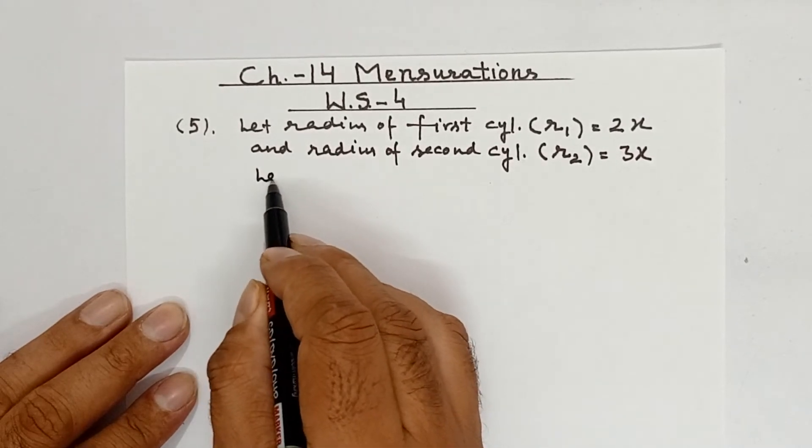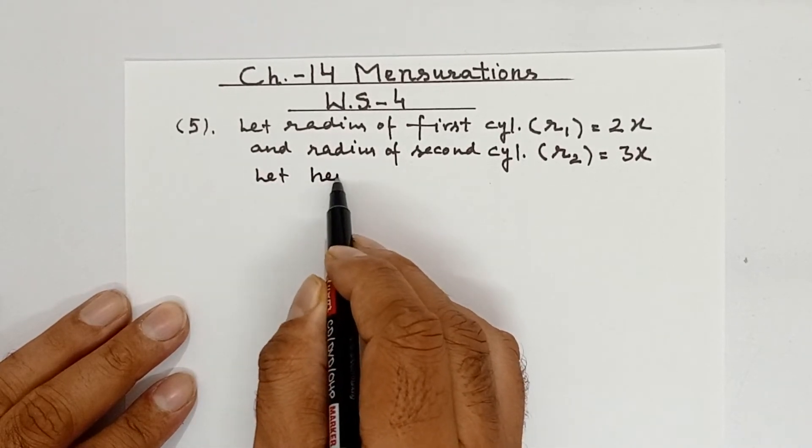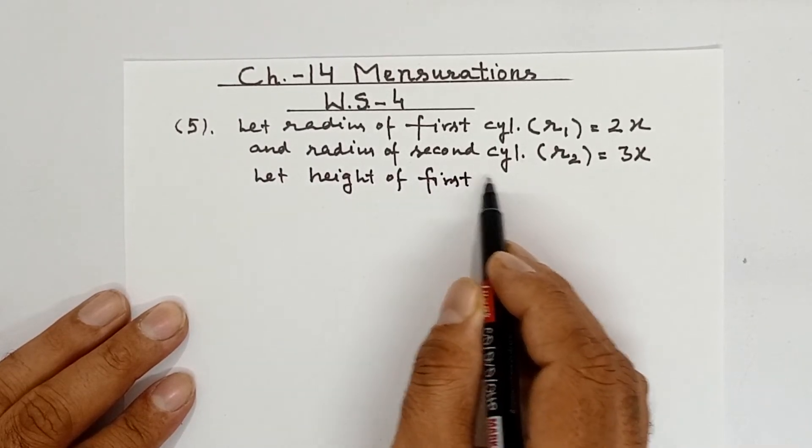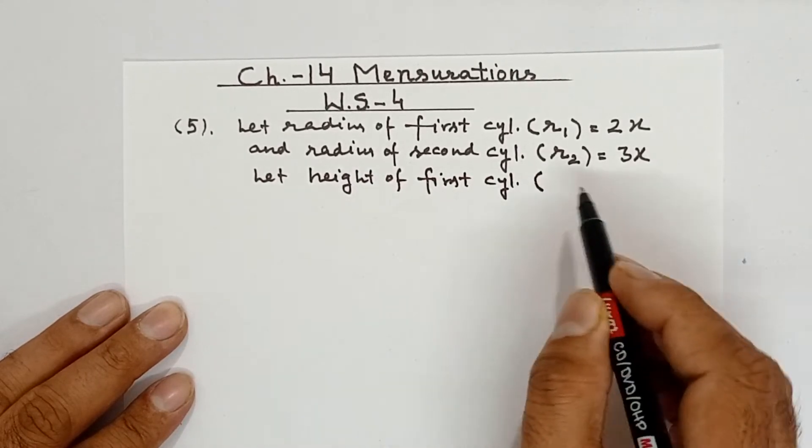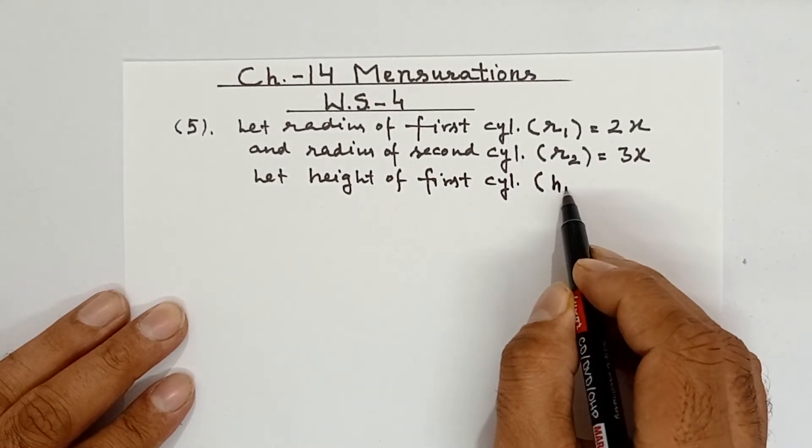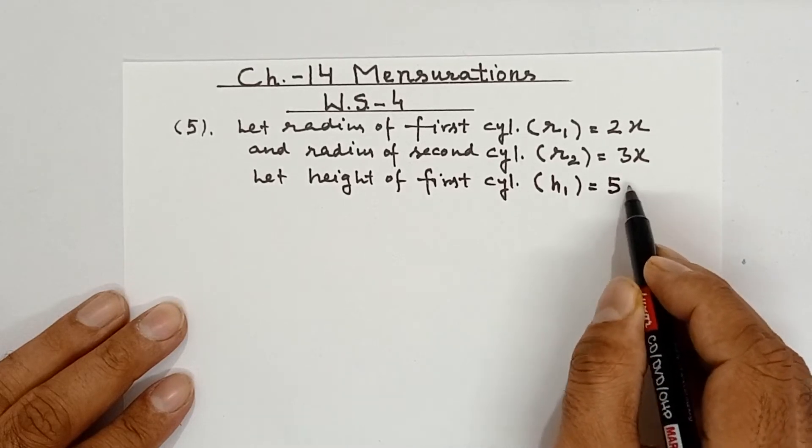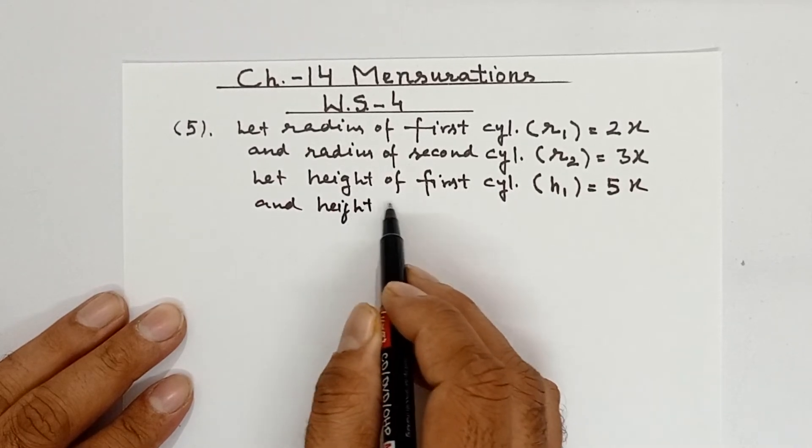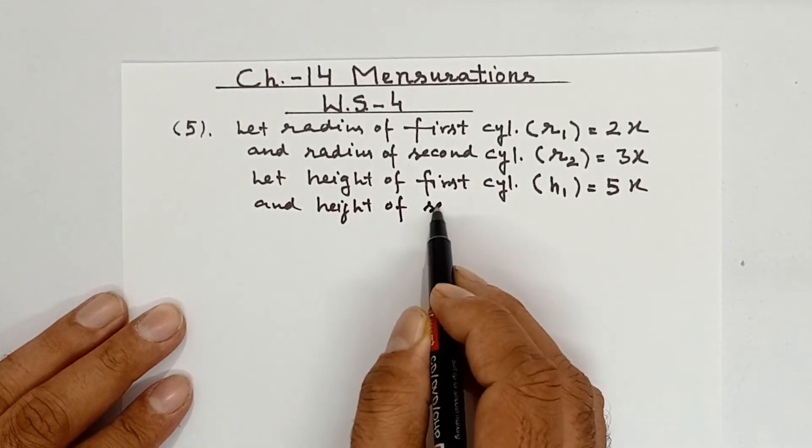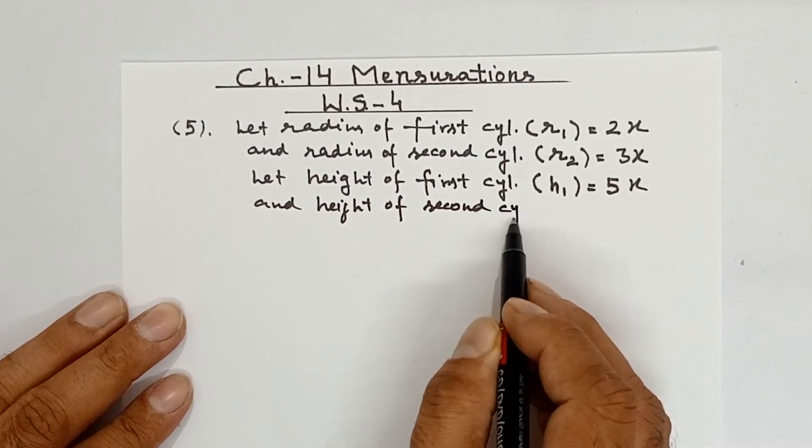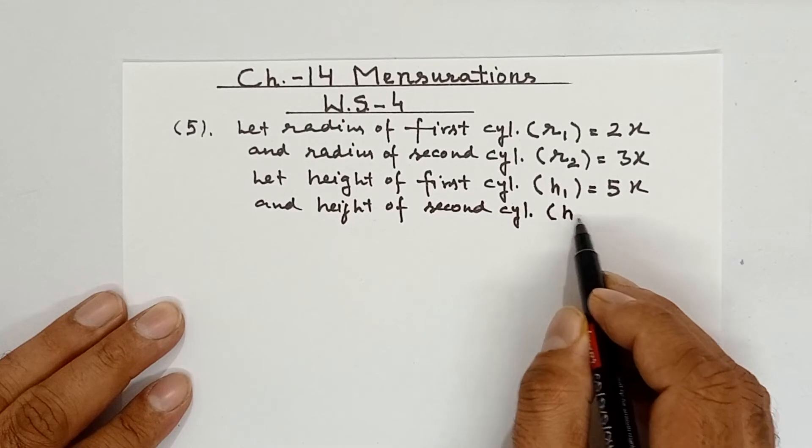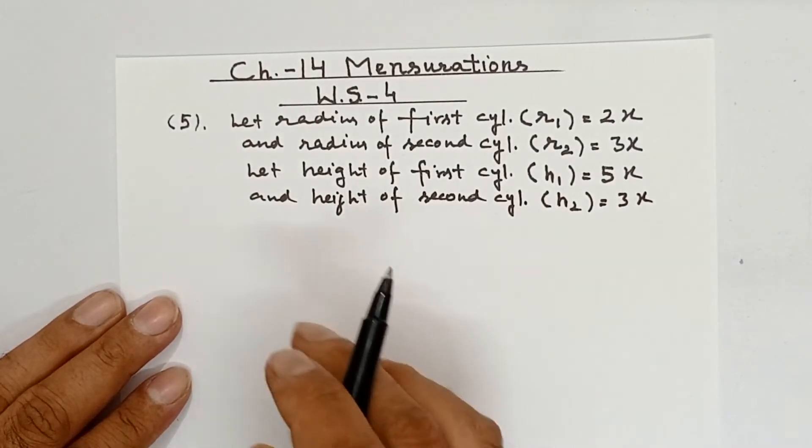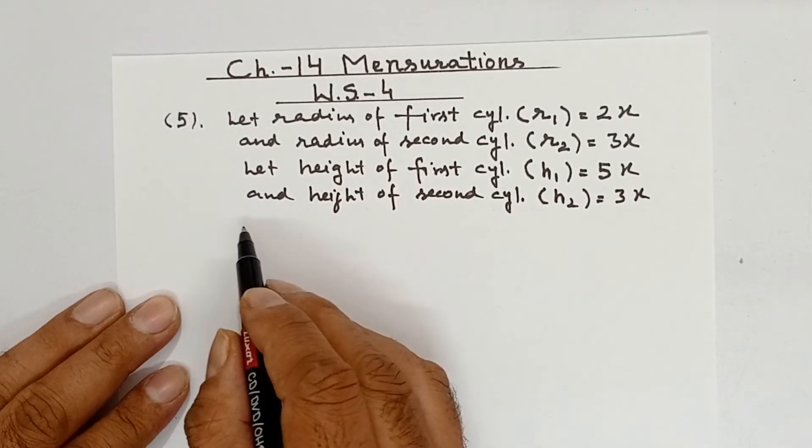Let height of first cylinder be denoted by H₁, and the ratio was given 5:3, so it will be 5x. And height of second cylinder is denoted by H₂, which is 3x. Now we want to find the ratio of the curved surface area.